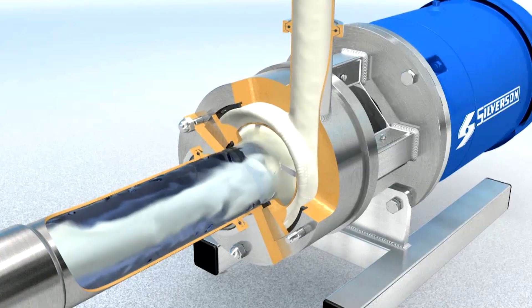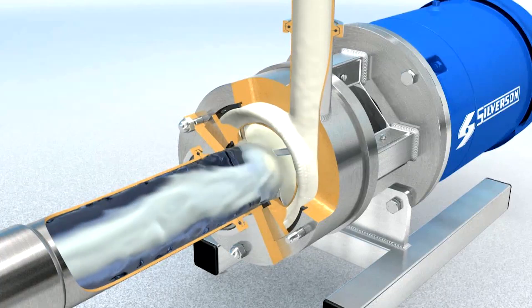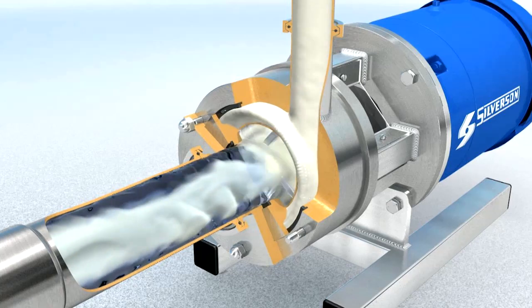Once all the high active surfactant has been added, you only need to recirculate for a short time to complete the mix. With large batches, the dilution cycle can be started during the water charging, further reducing process time.